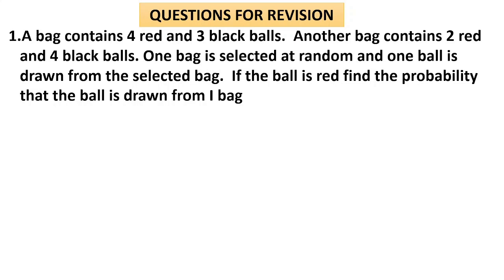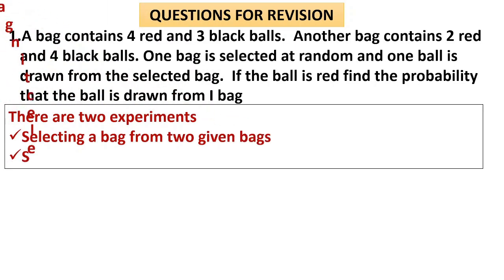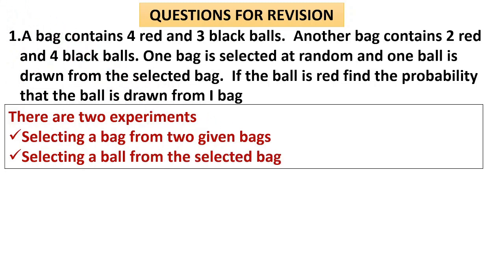Question number one: A bag contains 4 red and 3 black balls. Another bag contains 2 red and 4 black balls. One bag is selected and one ball is drawn from the selected bag. If the ball is red — since the outcome of the second experiment is fixed — this comes under Bayes' theorem. Find the probability that the ball is drawn from the first bag. The probability about the outcome of the first experiment is asked, about the bag specifically. Therefore, Bayes' theorem. There are two experiments: selecting a bag and selecting a ball.